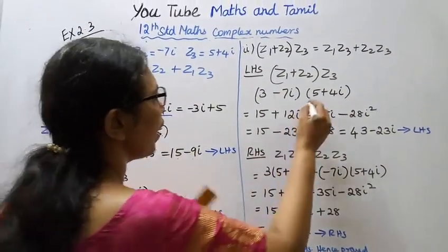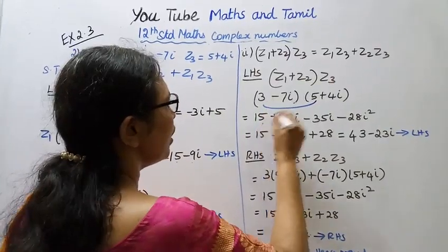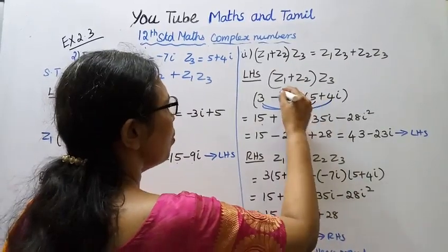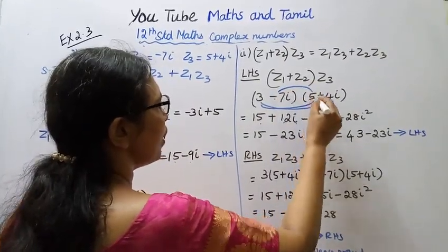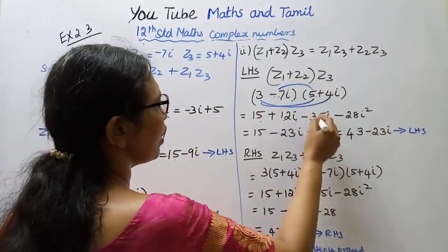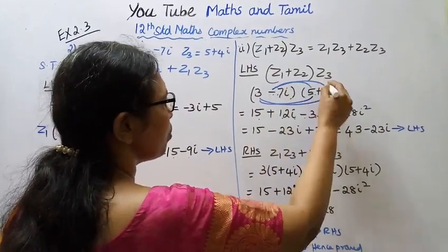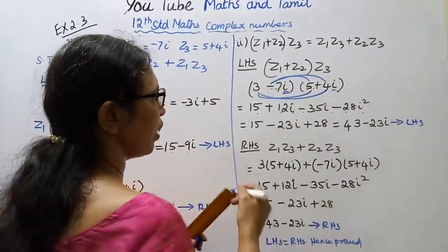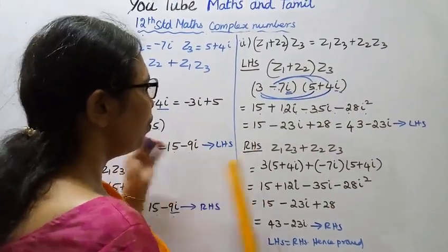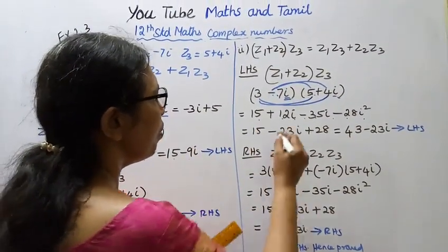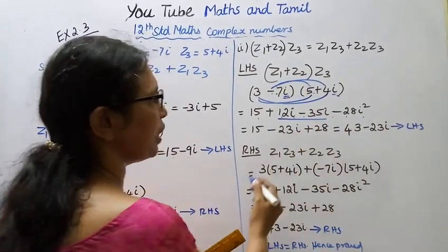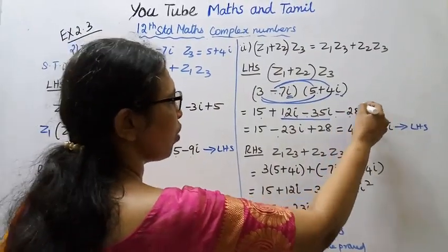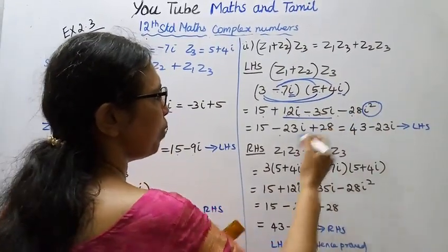Expanding (3 minus 7i)(5 plus 4i): 5 threes are 15, 4 threes are 12i. Minus 7 threes are minus 35i, minus 7 into 4i equals minus 28i squared. i squared value is minus 1, so minus 28 times minus 1 equals plus 28.